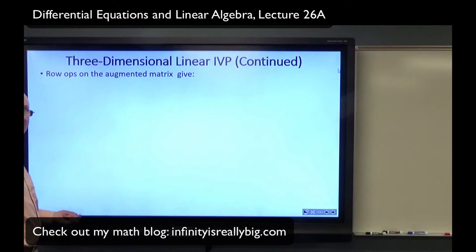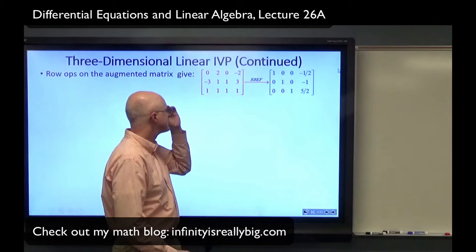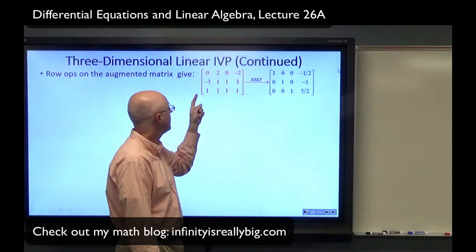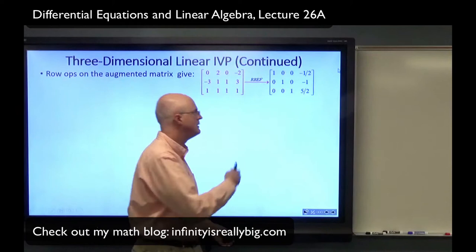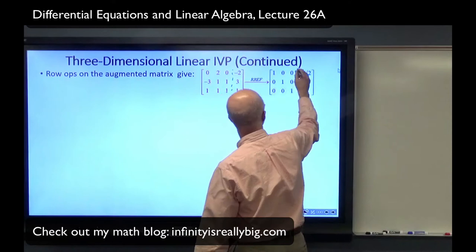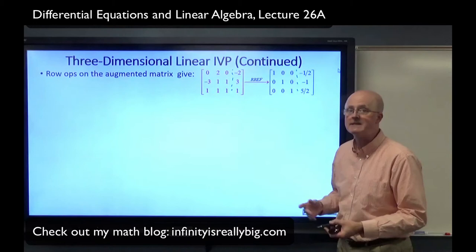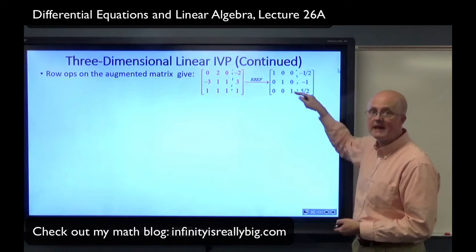We do row operations on the corresponding augmented matrix. The system is: 2K2 = −2; −3K1 + K2 + K3 = 3; and K1 + K2 + K3 = 1. Row reducing gives reduced row echelon form — there's a pivot in every row so a solution exists, and a pivot in every column so it is unique with no free variables. K1 must be −1.5, K2 must be −1, and K3 must be +5.5.